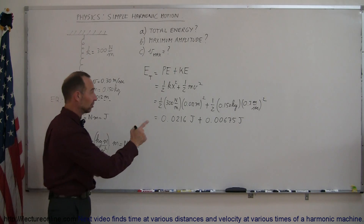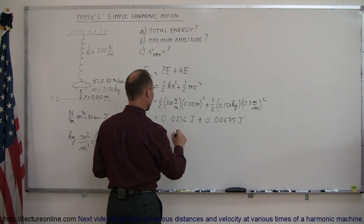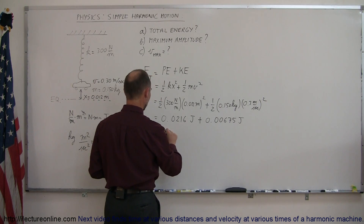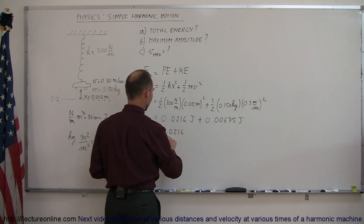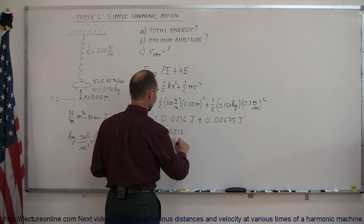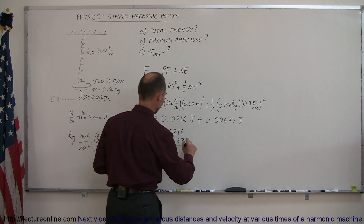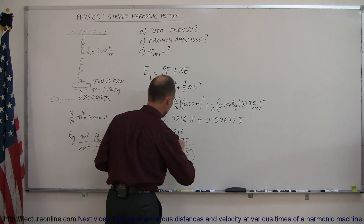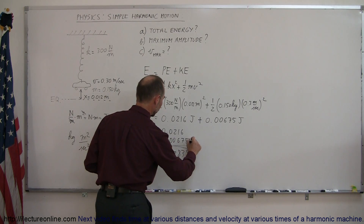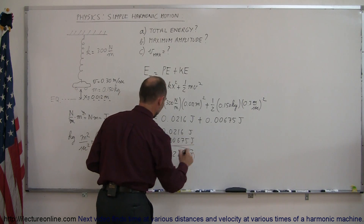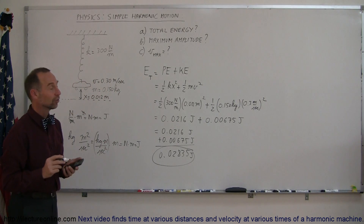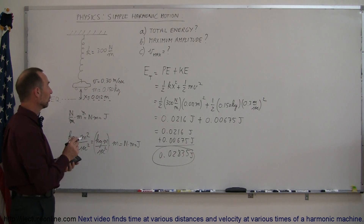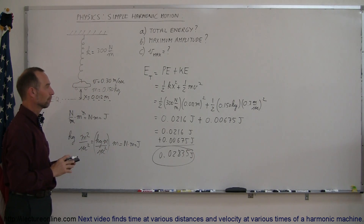The total energy is 0.0216 plus 0.00675, which equals 0.02835 joules. That is the total energy of the system at this position, and of course this value doesn't change — it would be the total energy anywhere along the oscillatory motion.